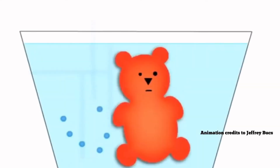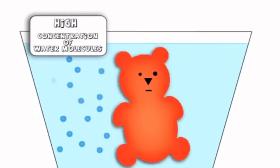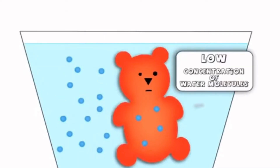The science behind the experiment: molecules are in constant motion and tend to move from areas of higher concentrations to lesser concentrations, also known as diffusion. The diffusion of water molecules through a selectively permeable membrane is also known as osmosis.